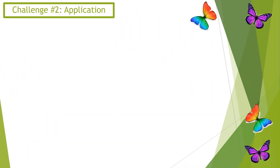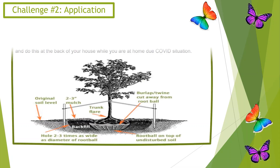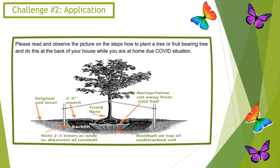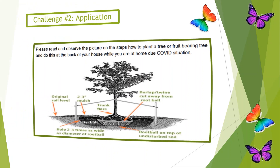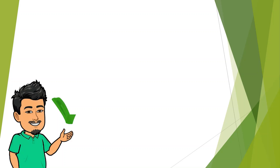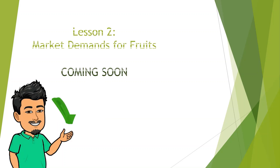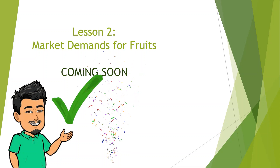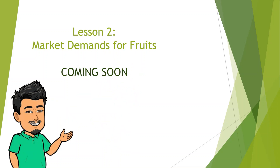Now let us have Challenge Number 2, the application activity. Please read and observe the picture and the steps on how to plant a tree or fruit-bearing tree, and do this at the back of your house while you are at home due to the COVID situation. Congratulations — we have just finished Lesson 1. Lesson 2 is about market demands for fruits, and it's coming soon.